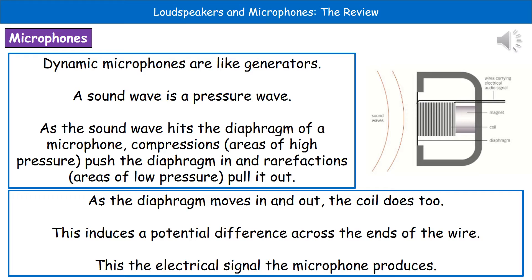First, we need to know that sound itself is a pressure wave. That means we have areas of high pressure called compressions and areas of low pressure called rarefactions. When the sound wave hits the diaphragm, the compressions — those areas of high pressure — push the diaphragm in, whereas when the rarefactions come into contact with it, they pull it out again.